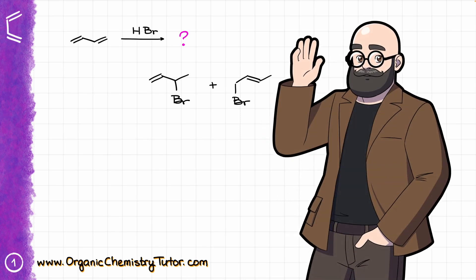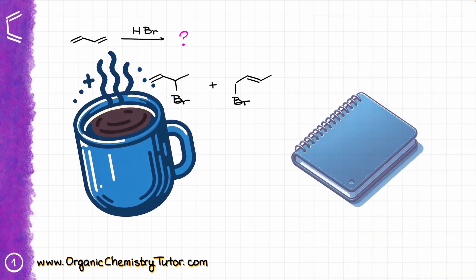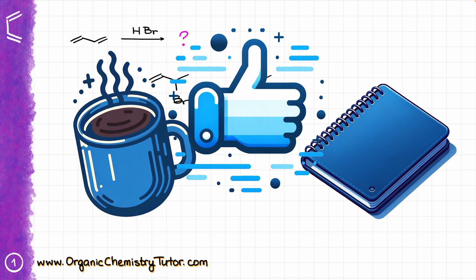Hey everyone, Victor here, your guide to all things organic chemistry. In this video, I want to talk about the details of the hydrohalogenation of dienes, how to approach this reaction, and how to determine the major versus minor products. So grab a cup of coffee, a notebook to work through the examples with me, hit that like button for good luck on the test, and let's get started.